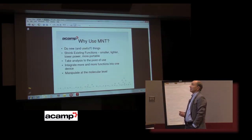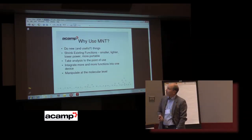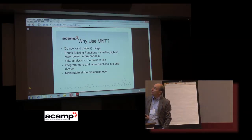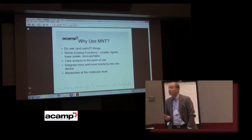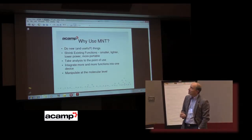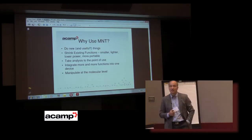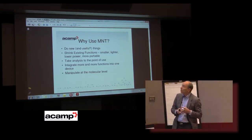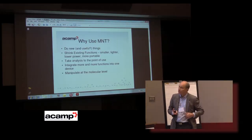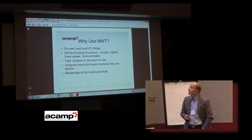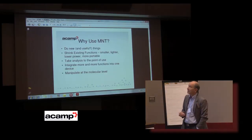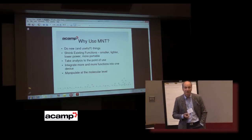So why do people want to use M&T? The key driver is doing new and useful things — realising new functions using micro and nanotechnology. One of the things we find pretty exciting is the ability to take existing functions and shrink them down, make them smaller, make them more portable and bring them to the point of need rather than having them stuck in a laboratory or a large facility. Taking analysis to the point of use is an area that could be of great interest in the agricultural and forestry sector.